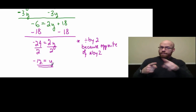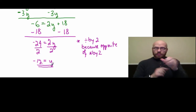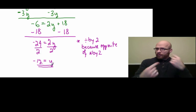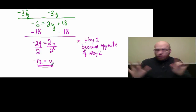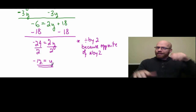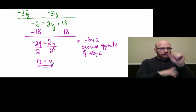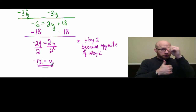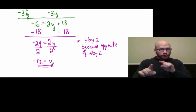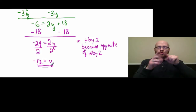Now we have negative 12 equals y. Our y is isolated and we have the answer negative 12. That's my answer so far — it has not been confirmed. We have to check the answer. Now when you check an answer, you have to go back into the original equation.